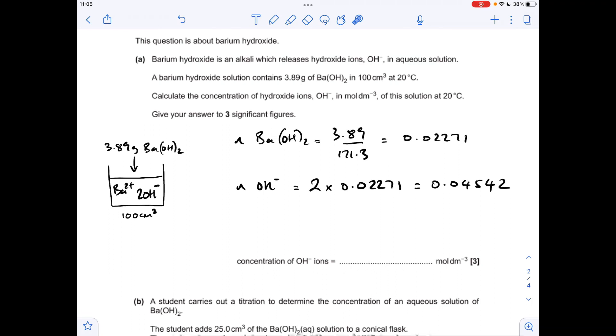So the concentration is the moles over the volume. The volume remember needs to be in decimetres cubed. So it's 0.04542 over 0.1, which to 3 significant figures is 0.454 moles per decimetre cubed.